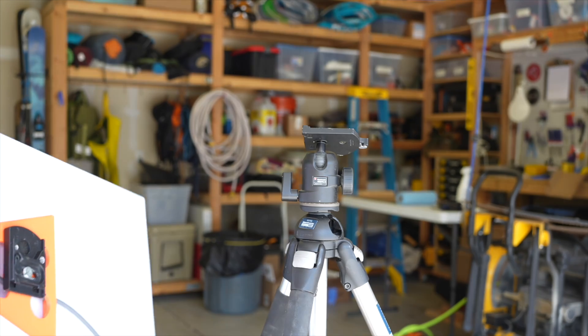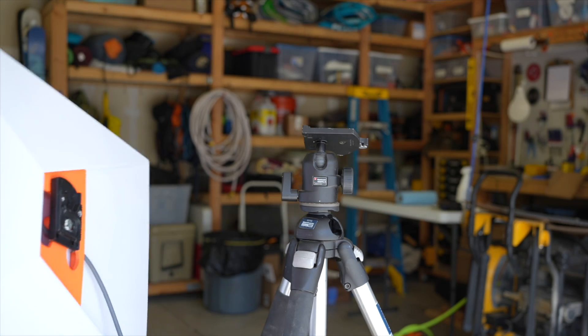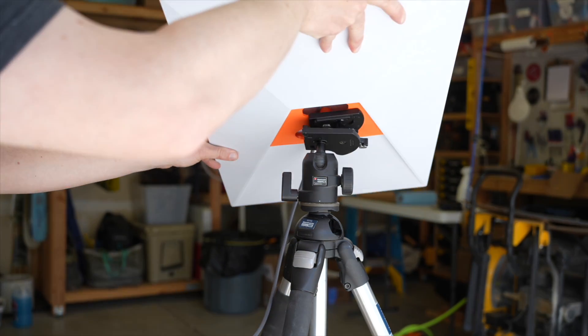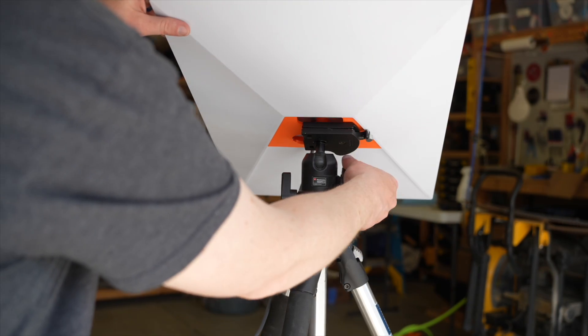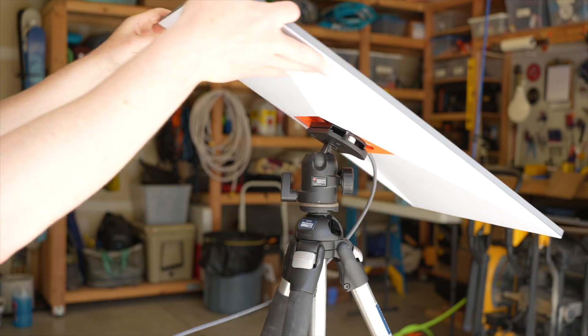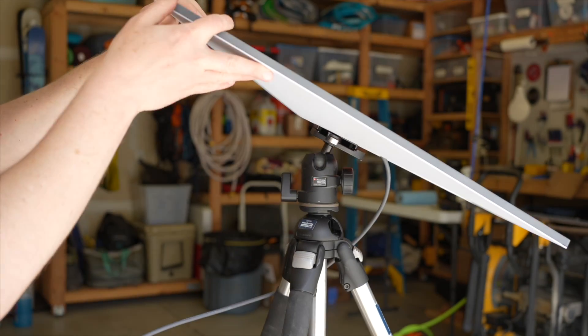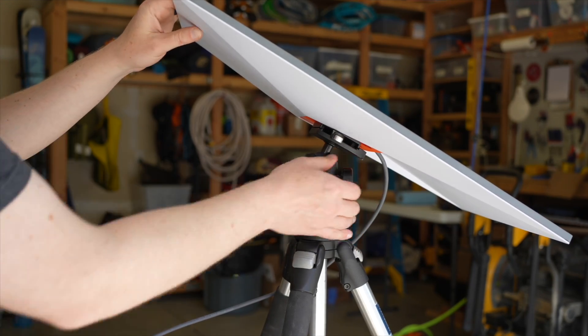Alright so once you have your Starlink tripod adapter mounted it's as easy as putting the quick disconnect plate on your tripod and then just snapping it on. I think a ball head can be a nice tripod head because it lets you easily rotate the dish to the desired 45 degree angle and then lock it in place.